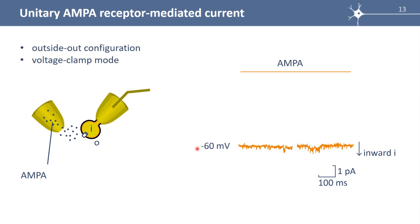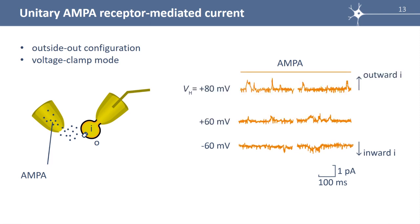We hold the membrane potential at minus 60 millivolt and we record inward currents that are very small. If we change the membrane potential to plus 60 millivolt, the current is outward during the application of AMPA. And if we depolarize more to plus 80 millivolt, the current is also outward but larger. This suggests that the reversal potential of the AMPA current is between minus 60 millivolt and plus 60 millivolt.